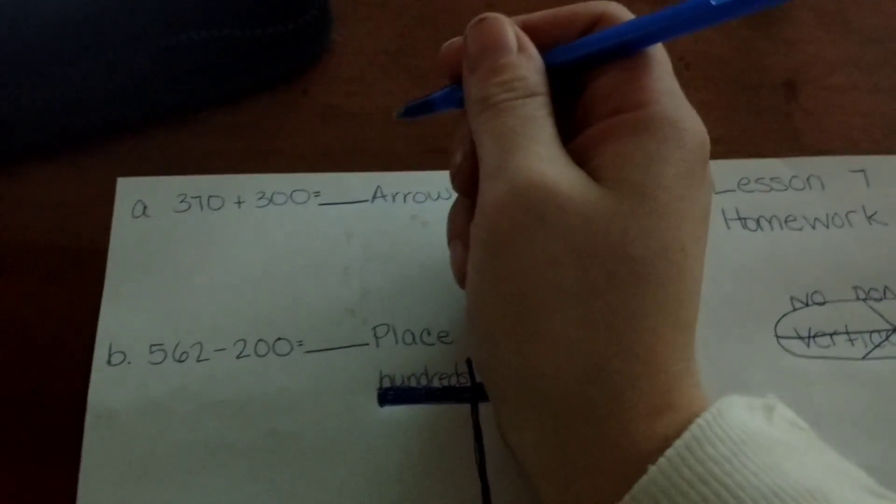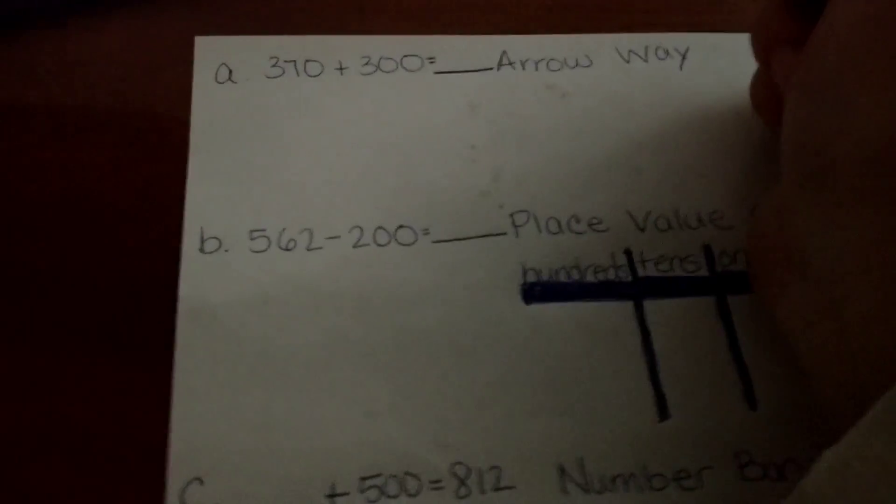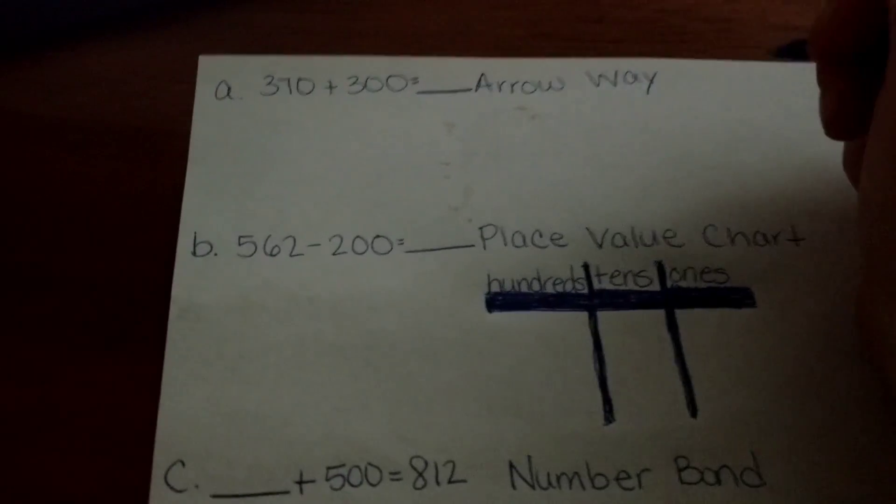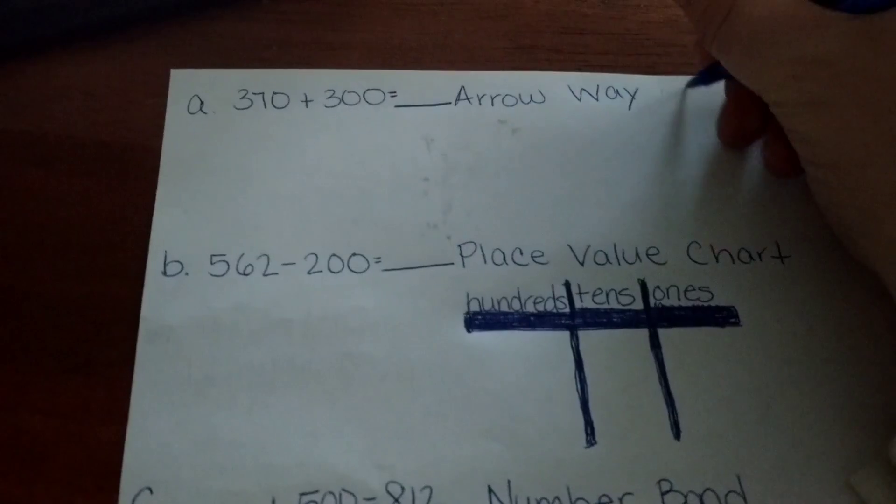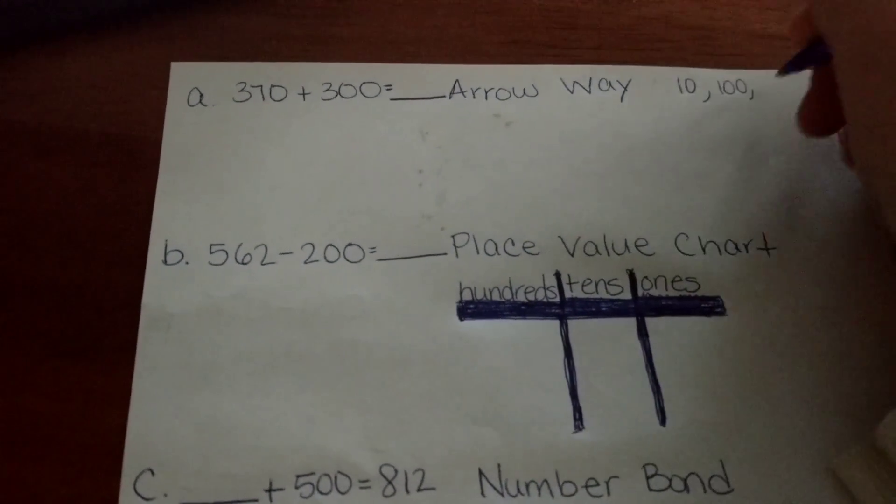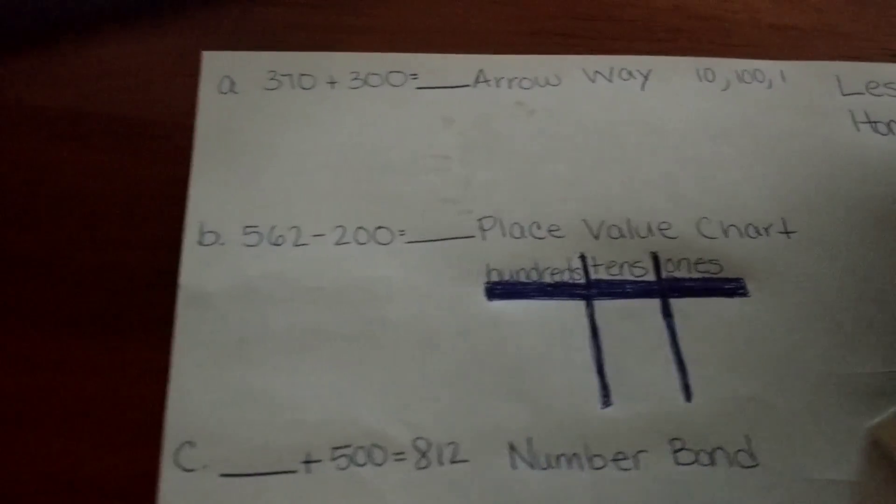Alright, so 370 plus 300. This is using the arrow way. When you use the arrow way, you want to add your 10's first, then your 100's, then any remaining 1's. Let's look at our 10's column that we are adding.